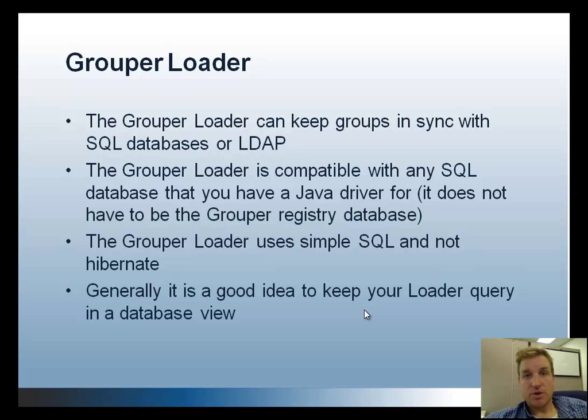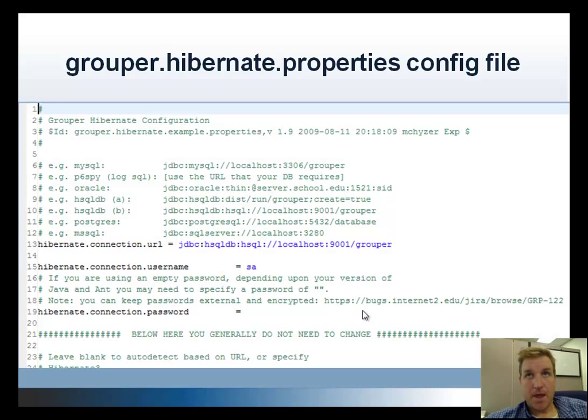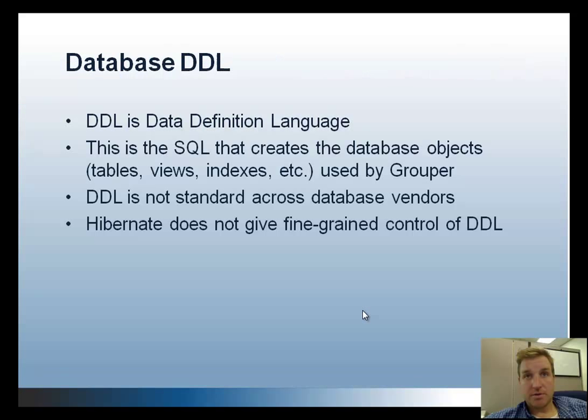Here's an example of the Grouper Hibernate properties, which tells Grouper which database to point to. A URL, username, and password are generally the only things you need to change, and the driver will be detected from the URL. DDL is Data Definition Language — the SQL that creates database objects, tables, views, and indexes used by Grouper. DDL is not standard across database vendors, and Hibernate does some DDL but it's not really good enough for what we need.